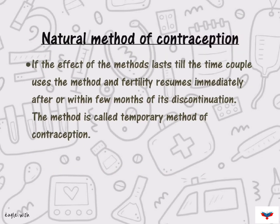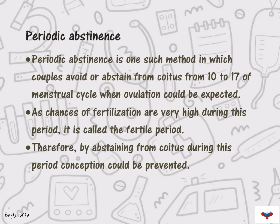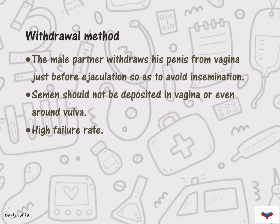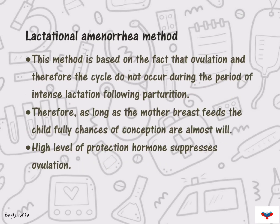Natural methods of contraception include periodic abstinence, the withdrawal method, and lactational amenorrhea.